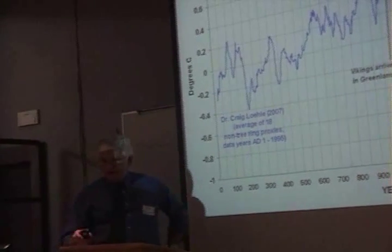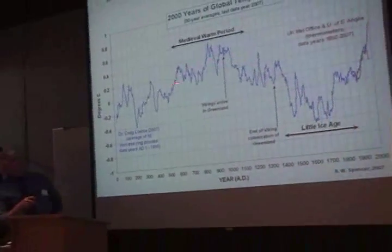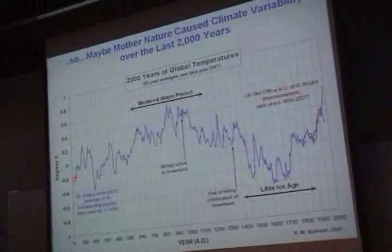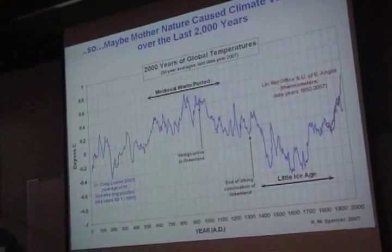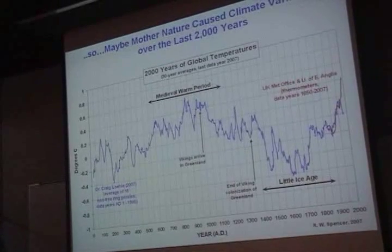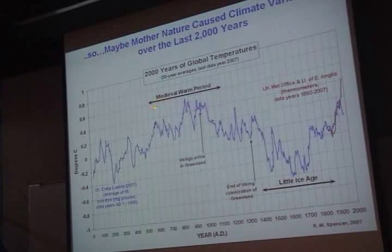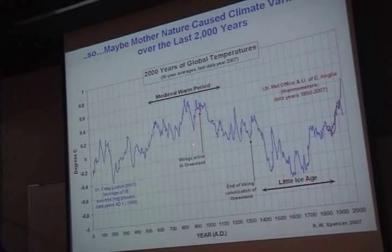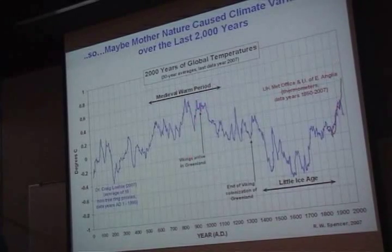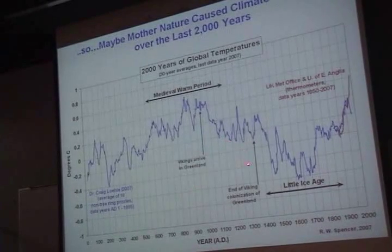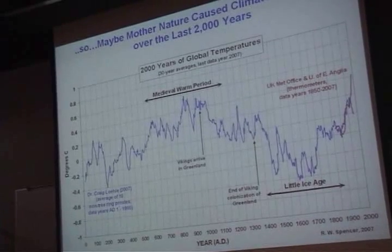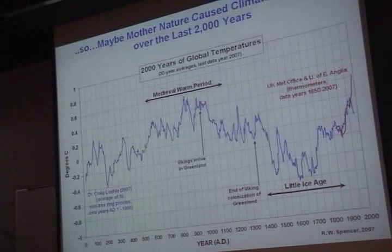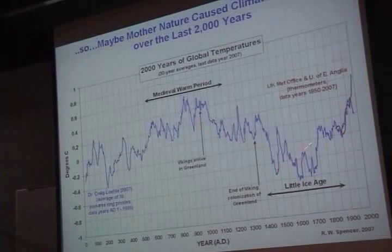Maybe Mother Nature really did cause the medieval warm period. This is 2,000 years of reconstructed temperatures based on an average of 18 temperature proxies published a couple of years ago. And sure enough, just like we know from history, there was a medieval warm period — this is where the Vikings arrived in Greenland and started farming, something they haven't been able to do since. A few hundred years later the civilization died out; farms got frozen out — climate change. And then you had the Little Ice Age, with the Thames River in London freezing over in wintertime, people ice skating. Doesn't happen anymore.